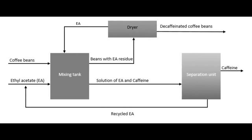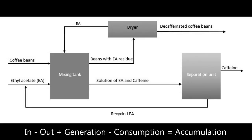This process demonstrates a very important principle in chemical engineering: material balance. By that we mean that material is conserved — whatever goes in must eventually come out. The material balance equation states that Input minus Output plus Generation minus Consumption equals Accumulation.